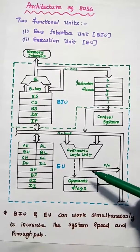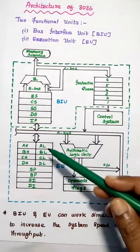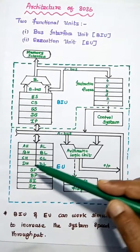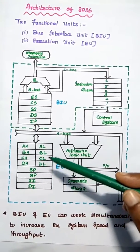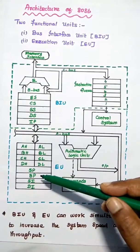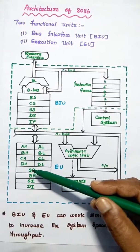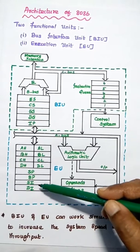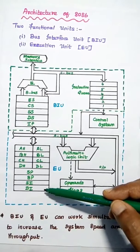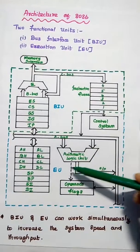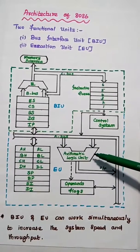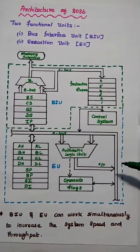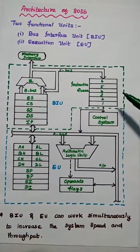Next, the Execution Unit consists of general purpose registers. There are eight general purpose registers: AH, AL, BH, BL, CH, CL, DH, DL — each one is a 1-byte register. There are also two pointer registers: stack pointer and base pointer, and two index registers: source index SI and destination index DI. The ALU is very important in the execution unit because it performs arithmetic operations and logical operations on the given data, and the output is sent to the data bus to be passed to the output port.